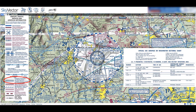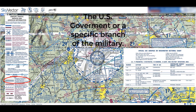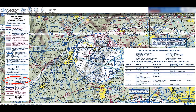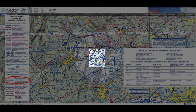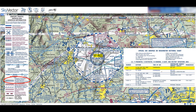Prohibited areas are just like they sound. Unless you have a very specific permission from the controlling agency and a waiver from the FAA, no one is allowed to fly in a prohibited area. On the map, prohibited areas are marked by a blue line with blue hash marks pointed inward. These will be differentiated from other types of airspace by the area ID which will start with a P. To find the vertical extent of a prohibited area, check the table on the edge of the sectional just like we did in the first video of this series.